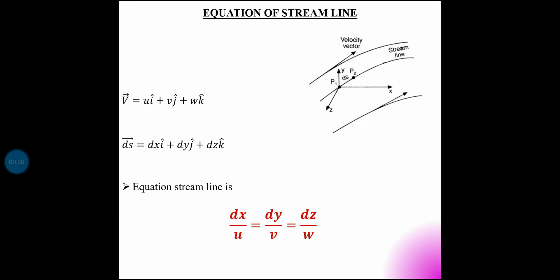Streamline equation — last class we discussed the streamline general equation: dx/u is equal to dy/v is equal to dz/w. Here dx, dy, dz correspond to displacements, and u, v, w are the velocity components.